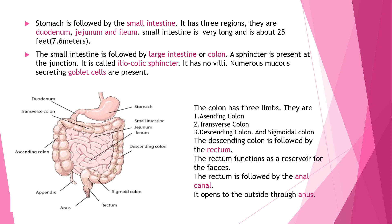The large intestine has no villi; numerous mucus-secreting goblet cells are present. The large intestine is divided into three parts: ascending colon, transverse colon, and descending colon, which includes the sigmoid colon. The descending colon is followed by the rectum, which functions as a reservoir for feces. The rectum is followed by the anal canal, which opens to the outside through the anus.